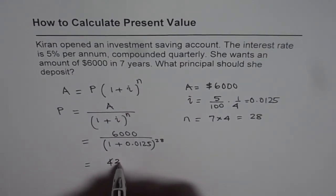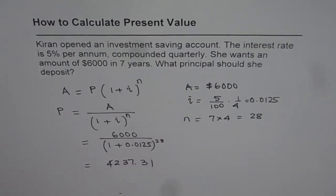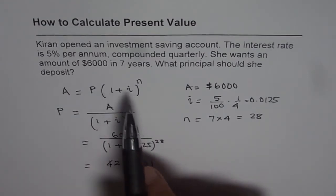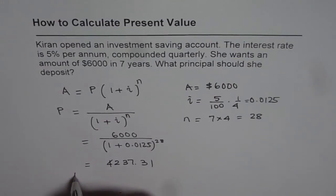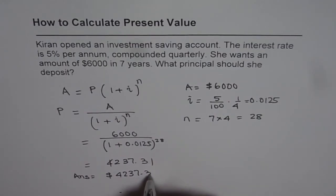So that is the amount which Kiran needs to deposit now so that she can get $6,000 in 7 years. So the answer is $4237.31.